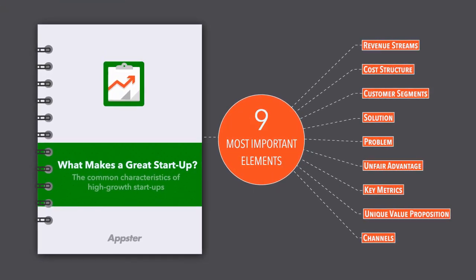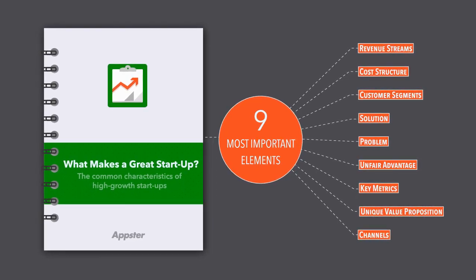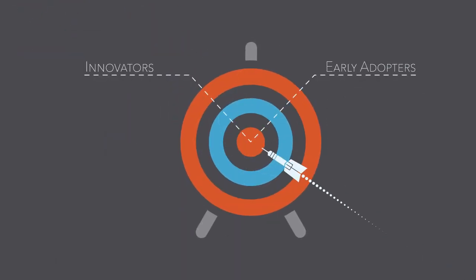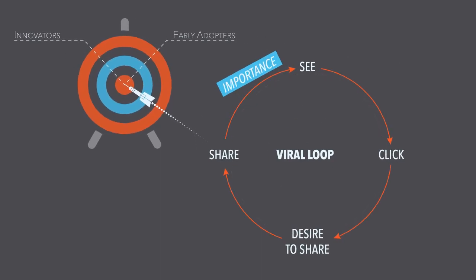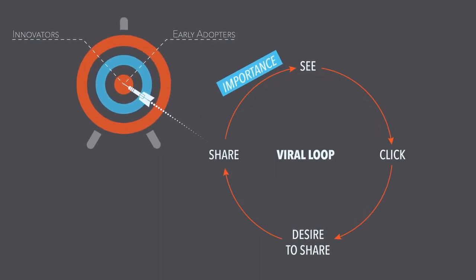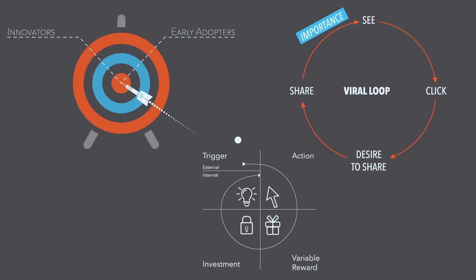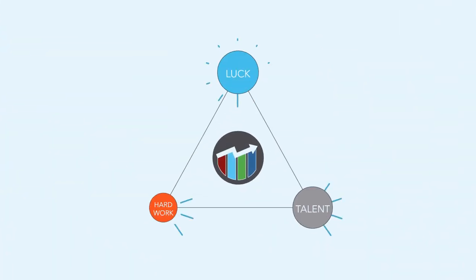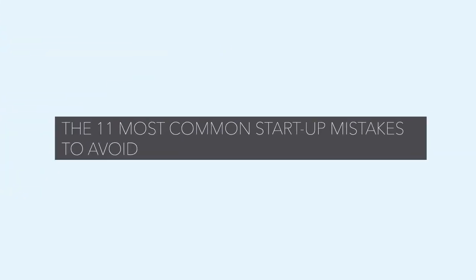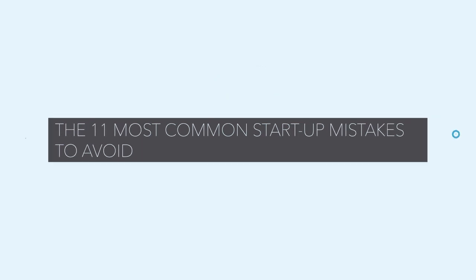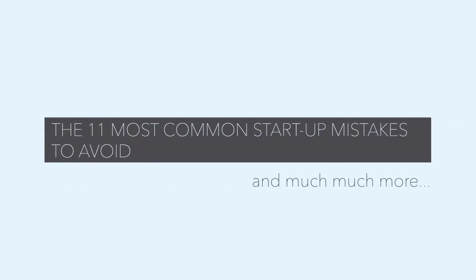In this exclusive report, we reveal the nine most important elements of a successful startup, the two highly responsive market segments you need to target, the importance of creating a viral loop, the four-part hooked model technique, why all growth startups need a success tripod, the 11 most common mistakes to avoid, and much, much more.